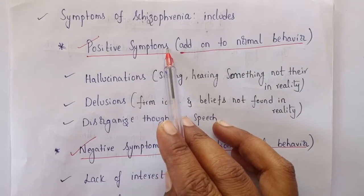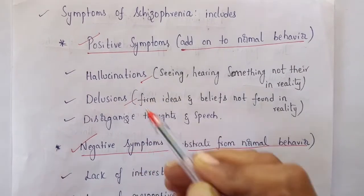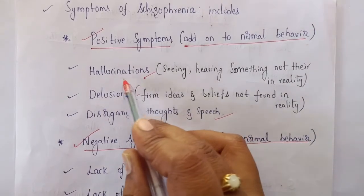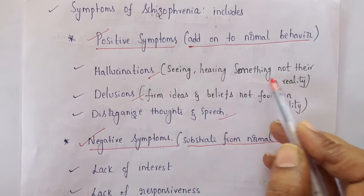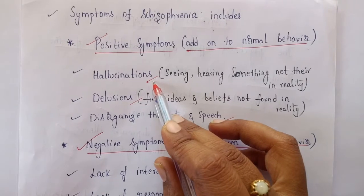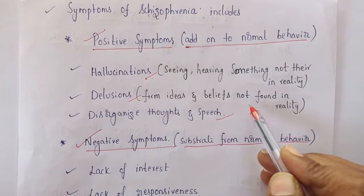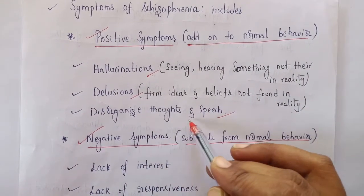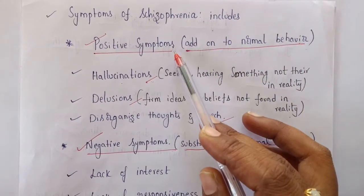The positive symptoms most commonly observed are: hallucinations, delusions, and disorganization of thoughts and speech. Hallucinations mean the person imagines or sees or hears something that is not there in reality. Delusions are firm ideas and beliefs not found in reality. Disorganized thoughts and speech are also added to normal behavior, which is why we call them positive symptoms.